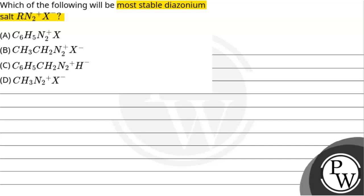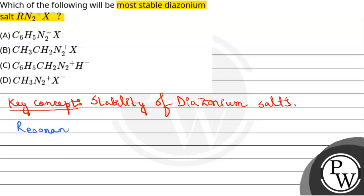First, I want to write the key concept of the stability of diazonium salts. Now, the main crux of the question is that resonance stabilizes the compound. At the same time, you will have stability. Stability will be added.